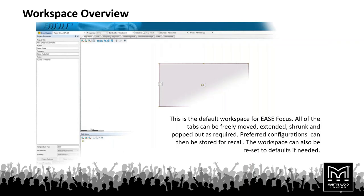Our workspace when you open Ease Focus is going to look something like this — the default workspace. All of the windows can be moved out, extended, shrunk, tabbed around — all the standard Windows functionality. You can also store preferred configurations within the software and reset the defaults if required. Word of warning though: if you use the reset defaults function, make sure you've saved your file first, because the way it resets is by closing and reopening the software — so any unsaved data will be lost.